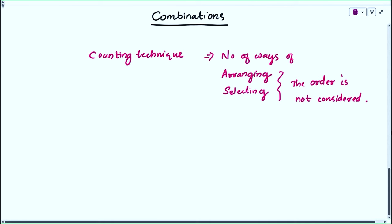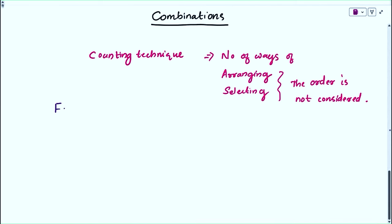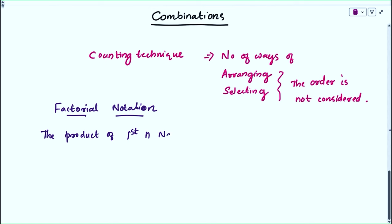Before going into detail, we must know some notations. That notation is called factorial. The factorial notation is the product of the first n natural numbers, denoted by the letter n, and it is called n factorial. This is our notation — the notation is called factorial notation.